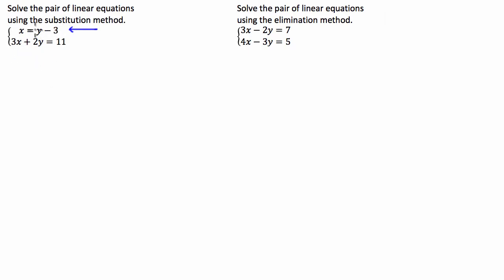Now what I mean by that is in this one here we're going to go, well we know x is equal to y take 3 so we're going to write the second equation down. Rather than writing x we're going to say y take 3. So you can see I've substituted the first equation into the second then I'm going to go plus 2y equals 11.